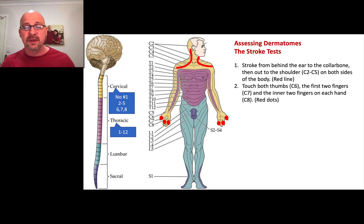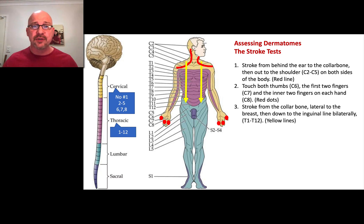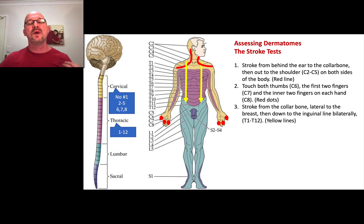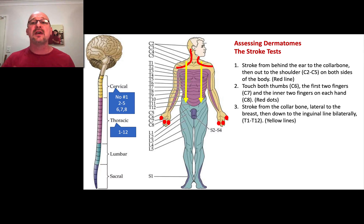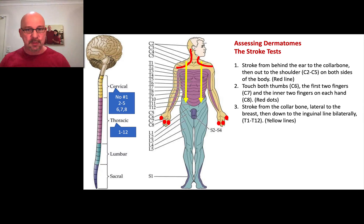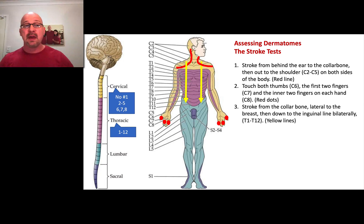Next we do the thoracic dermatomes with a simple stroke from above the clavicles down the body to roughly the belt line, below the hips — one side, then the other. For women with breasts, don't stroke over the breast. Instead, come down and go around the side, around the breast tissue, then back down normally. If they can feel you touching both sides and it's all normal, the thoracic dermatomes are intact.